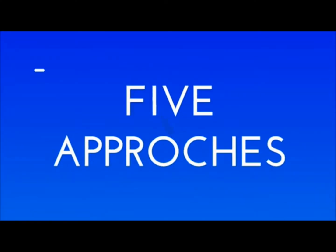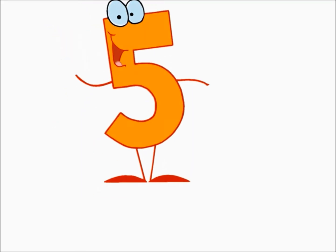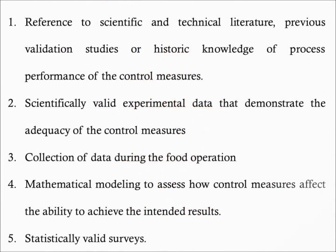The Codex Standard recognizes five approaches that can be used for validation. Those approaches are: 1. Reference to scientific and technical literature, previous validation studies, or historic knowledge of process performance. 2. Scientifically valid experimental data that demonstrate the adequacy of the control measures. 3. Collection of data during the food operation. 4. Mathematical modeling to assess how control measures affect the ability to achieve the intended results. 5. Statistically valid surveys.